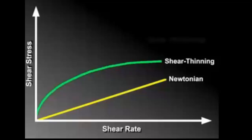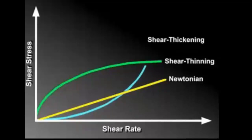The opposite is true of the shear thickening fluid. The viscosity will increase with increasing shear rate, and the slope of the curve will increase with increasing shear rate. The resulting curve is concaved upward.